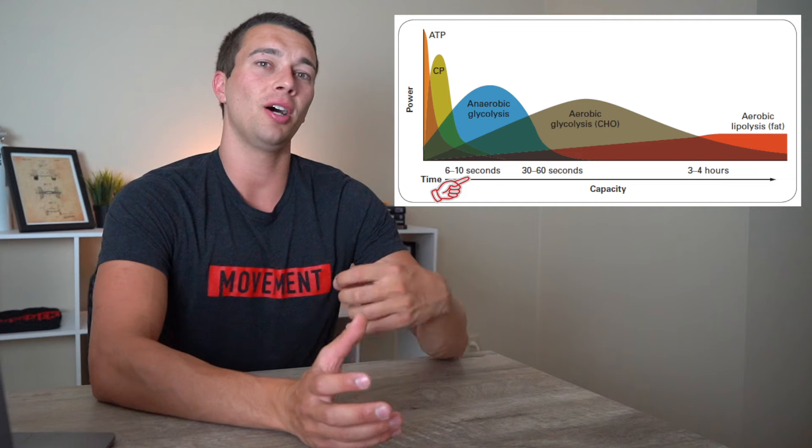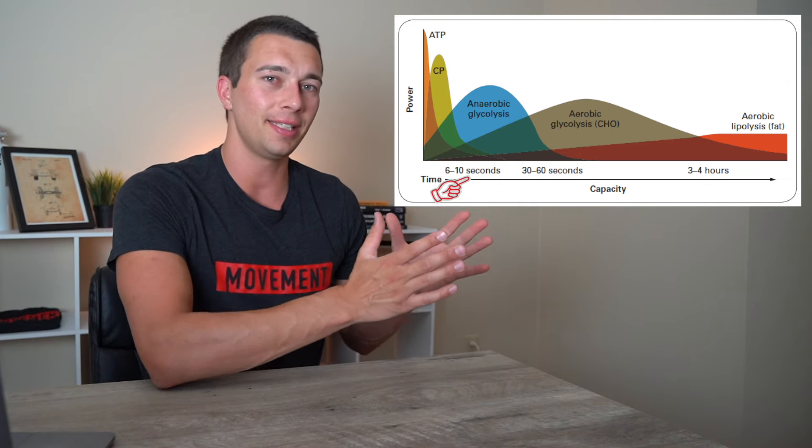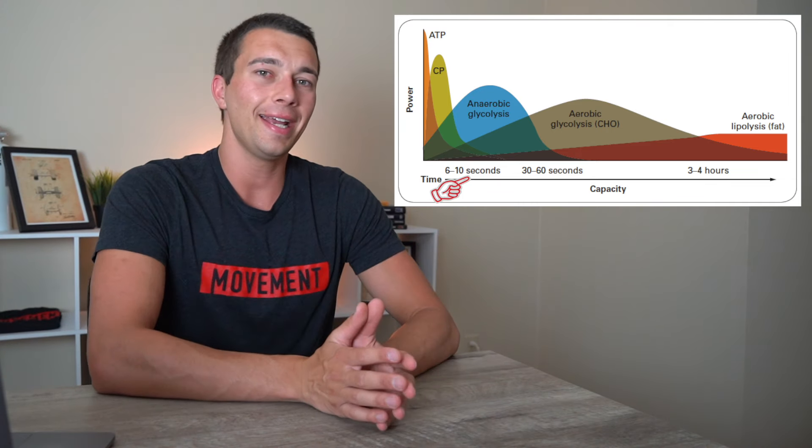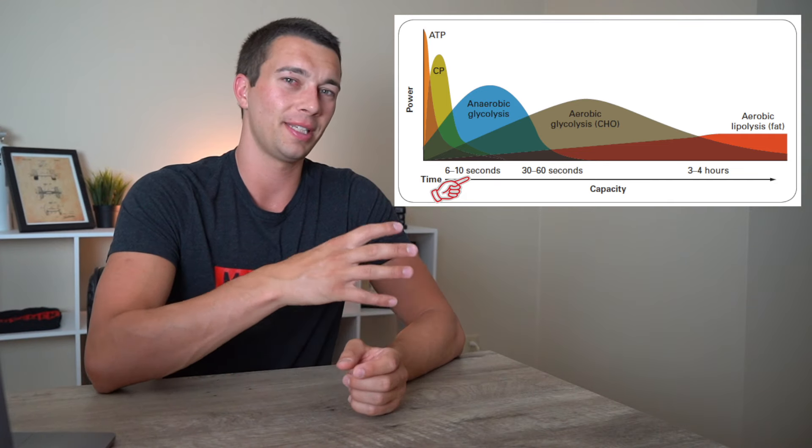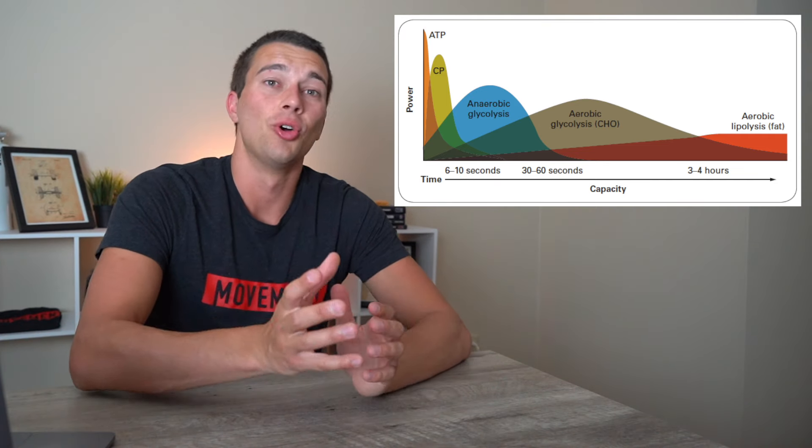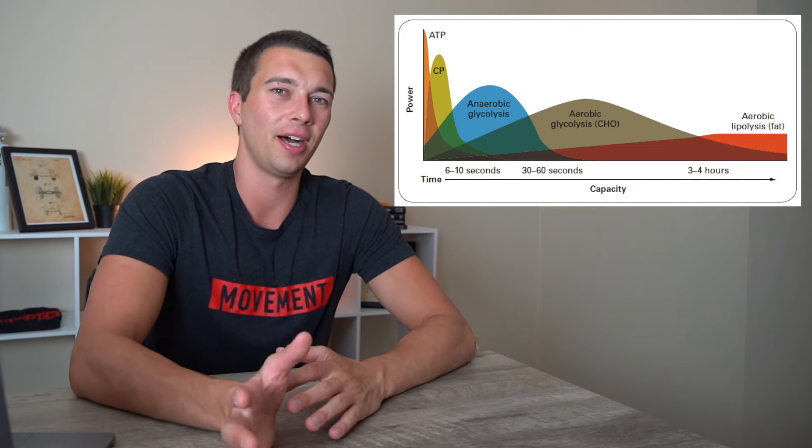The primary system in this 11, 12 second range is going to be anaerobic or fast glycolysis. But as you can see, there's some contribution from the ATP-PC system that you see at the front of that chart, and there's some contribution from aerobic, but the primary system is that anaerobic glycolysis.